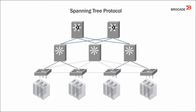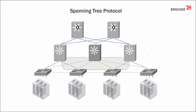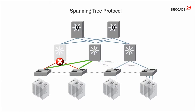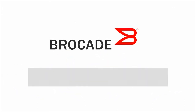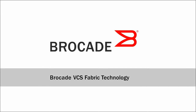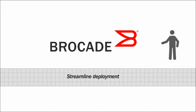The ubiquitous spanning tree protocol, for example, holds the utilization rate down with redundant links that become active only if the primary link fails. Otherwise they're kept inactive to prevent network loops.